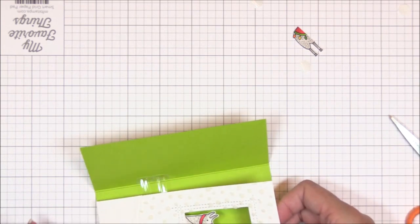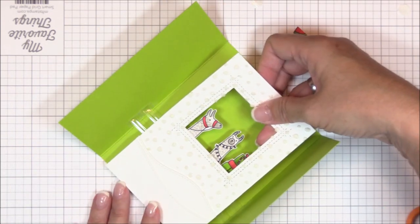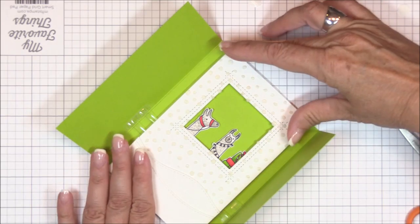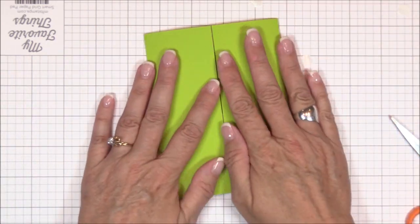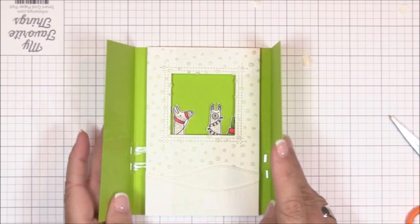And now I can reattach the interior panel to the inside of the card base, making sure to leave gaps on the left and right sides and aligning the top and bottom of the panel with the top and bottom edges of the card base. And it works perfectly!